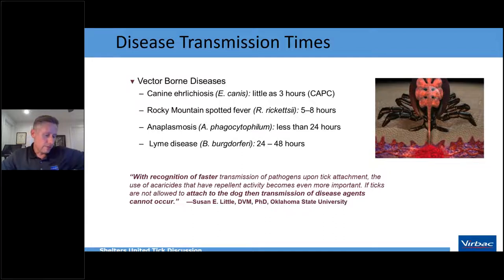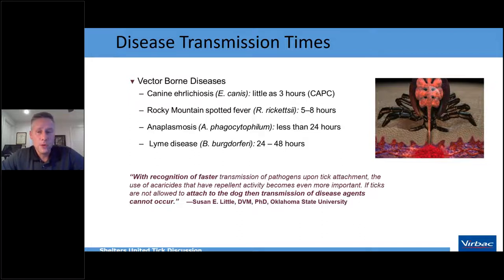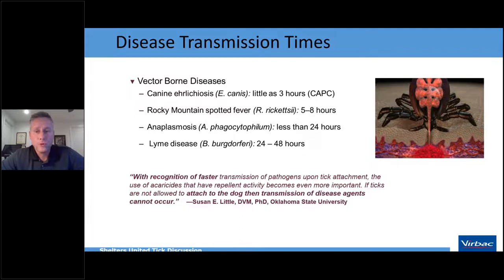Tick transmission time is critically important because not all tick preventatives are instantaneous. Canine ehrlichiosis can be transmitted in as little as 3 hours, Rocky Mountain spotted fever in 5–8 hours, anaplasmosis in approximately 24 hours, and Lyme disease (Borrelia) in 24–48 hours. As Dr. Susan Little of Oklahoma State notes, with recognition of faster-transmitting pathogens, we need tick preventatives that have repellent activity to get ticks off dogs as quickly as possible.